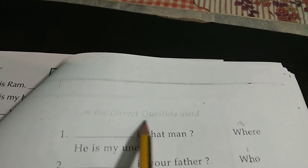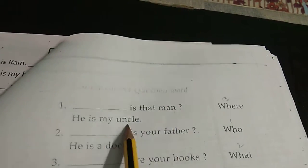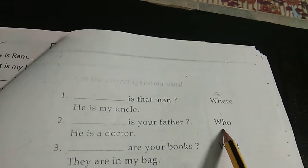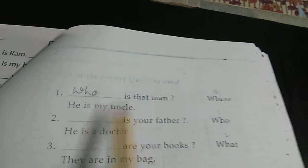Now put the correct question word. Now see, dash is that man. He is my uncle. From here, which is the one? Number one answer: who is that man. So here it will be, who is that man? He is my uncle.